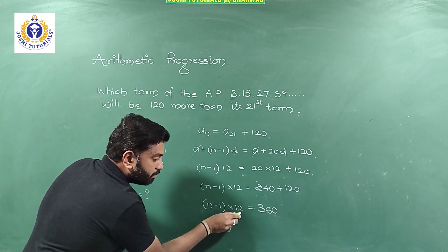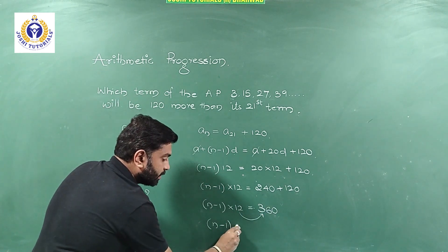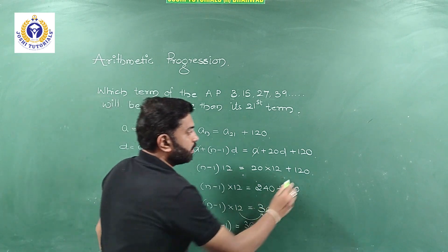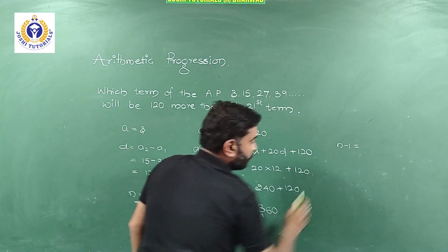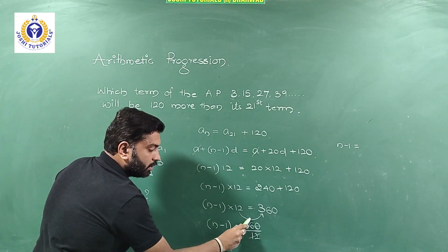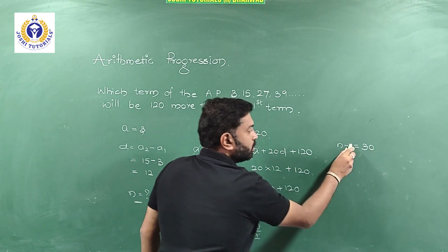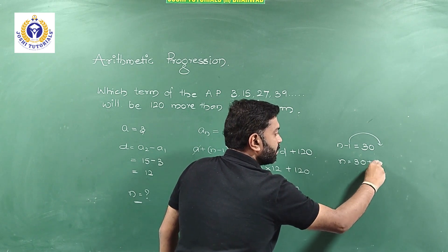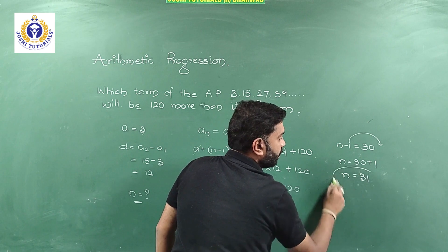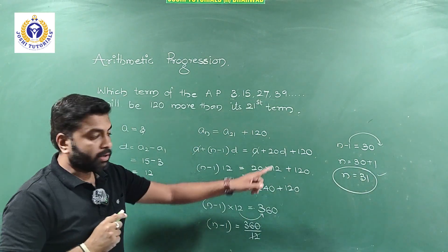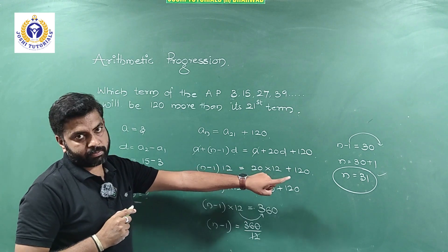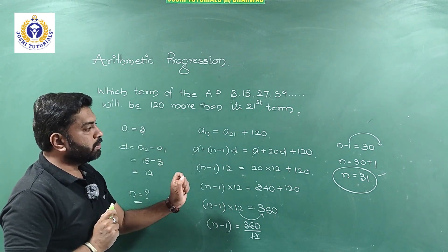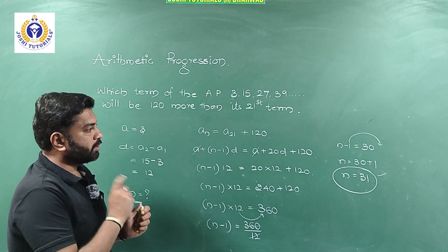Dividing both sides by 12: n−1 = 360÷12 = 30. Shifting the −1: n = 30 + 1 = 31. Therefore n = 31. This is the final answer. We can conclude that the 31st term is 120 more than its 21st term. A very simple question — you can look into the question and note it down.